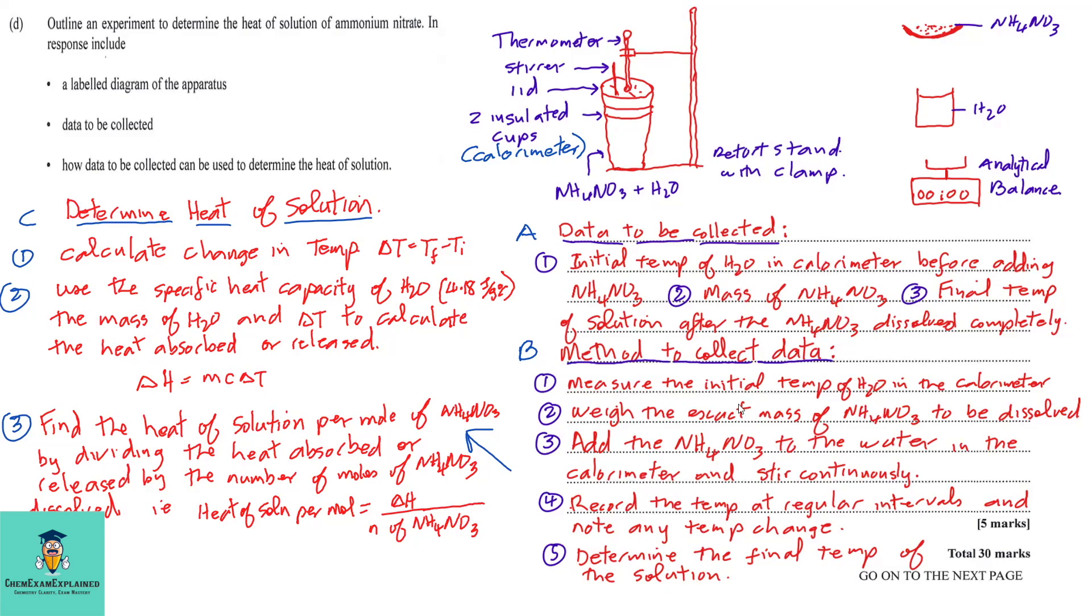Now, we will use this information that we measured in terms of the temperature to find the temperature change. So, the first thing we'll do is to calculate the temperature change from the final temperature and the initial temperature. We then need to note the specific heat capacity of water and we need to note the volume or mass of water used. Because in this case, one gram is equal to one cm³. So, the volume of water would be equal to the mass of water.